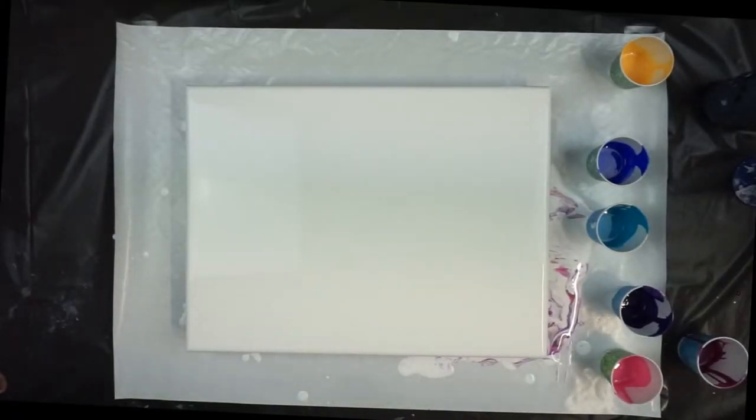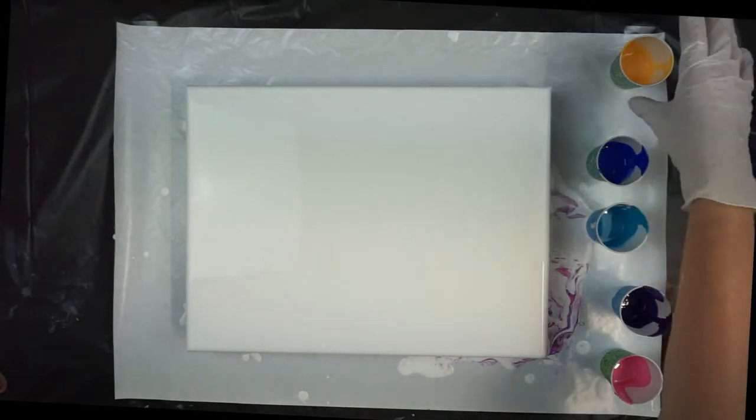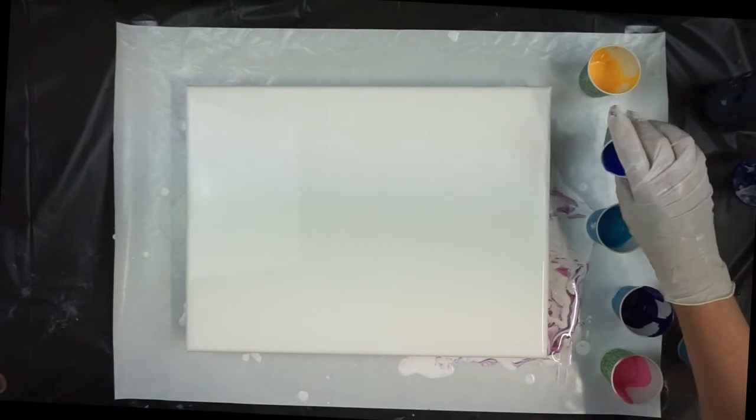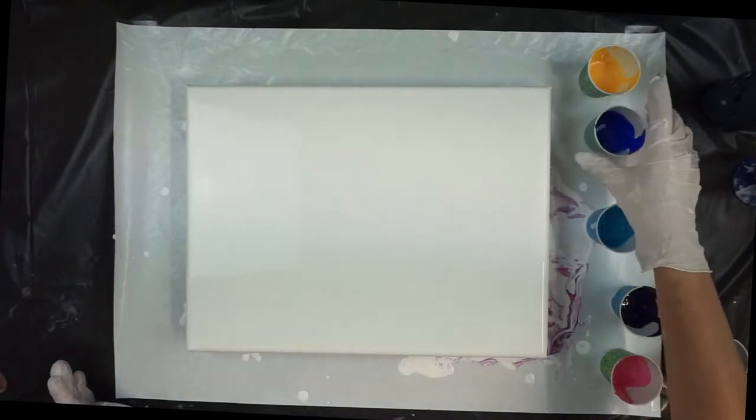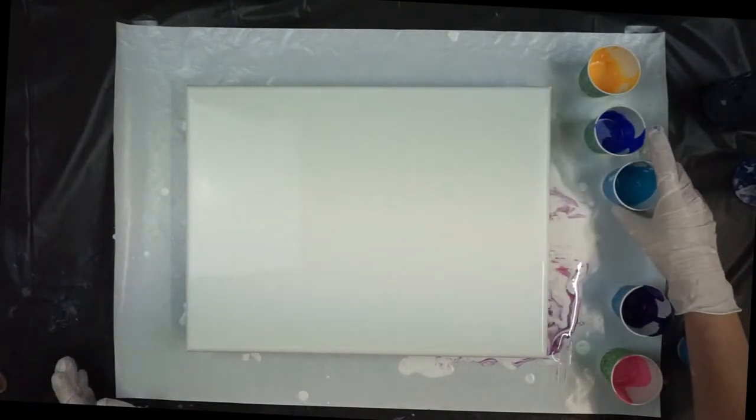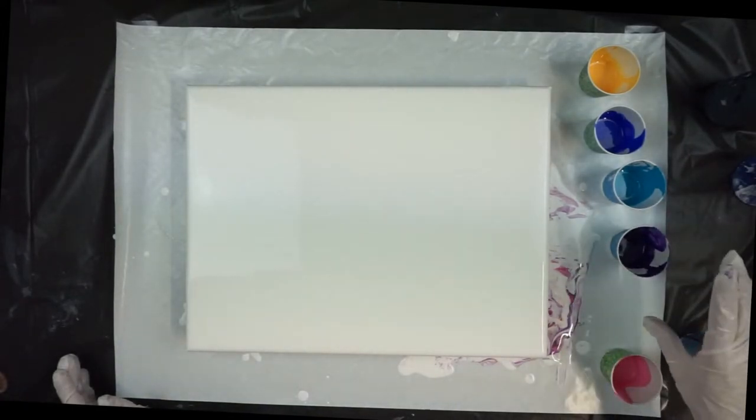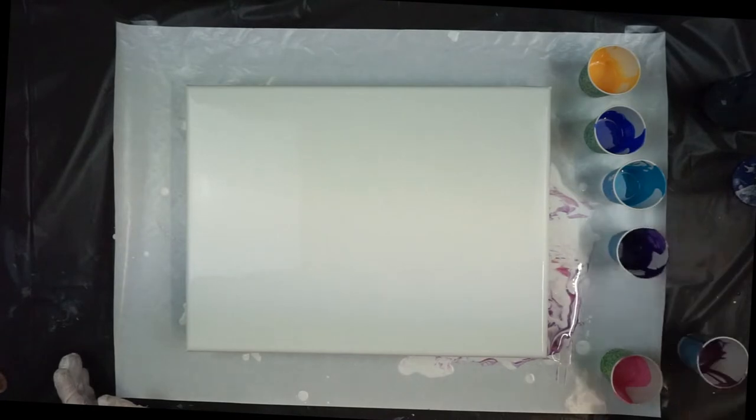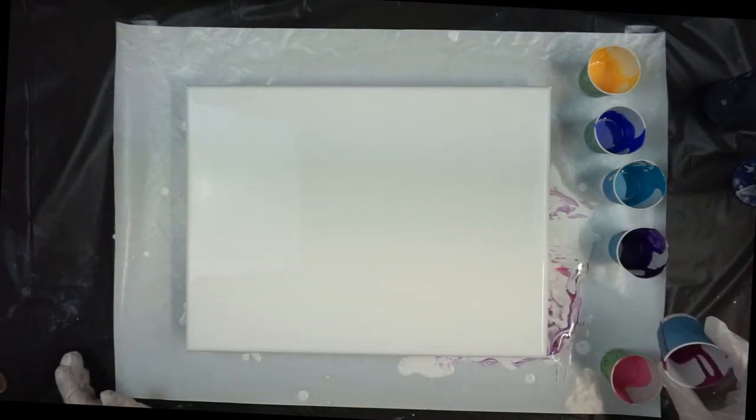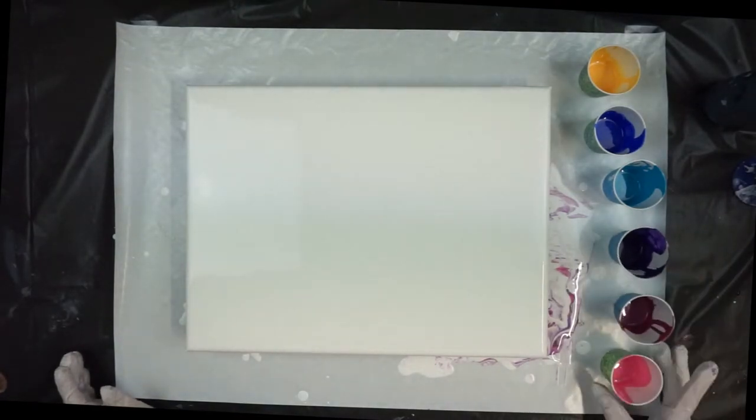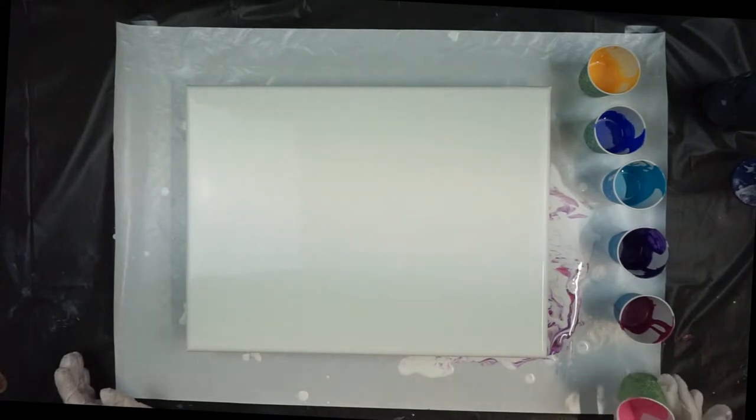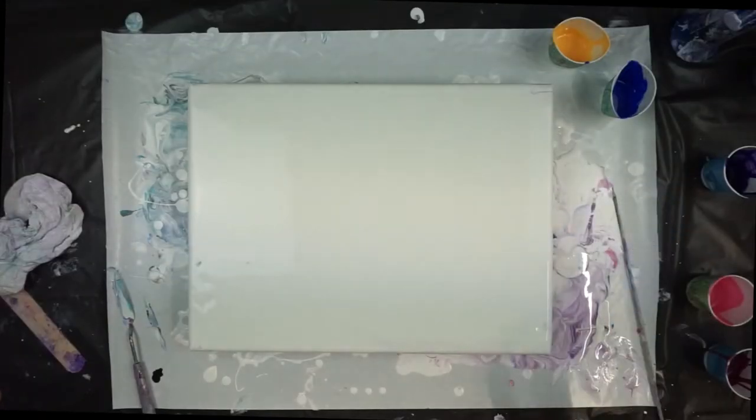Hi everybody, Lorraine here. Gonna do a Dutch pour today. I have two sets of colors: Naples yellow, ultramarine blue, turquoise blue, dioxazine purple, metallic berry, and a purple red.